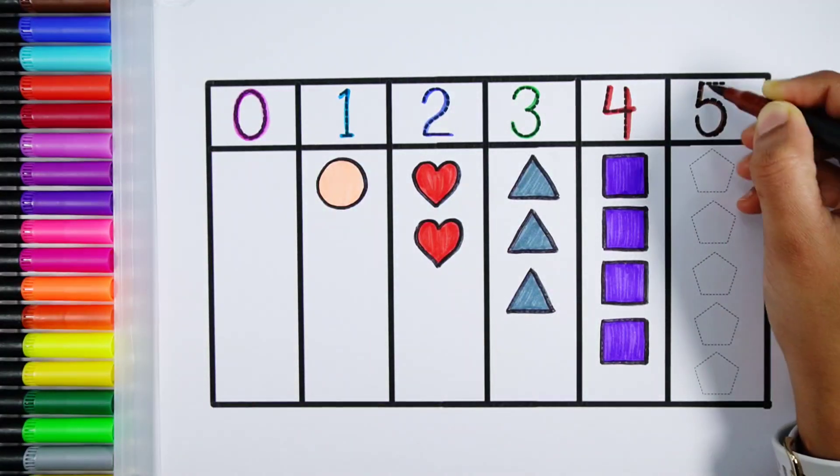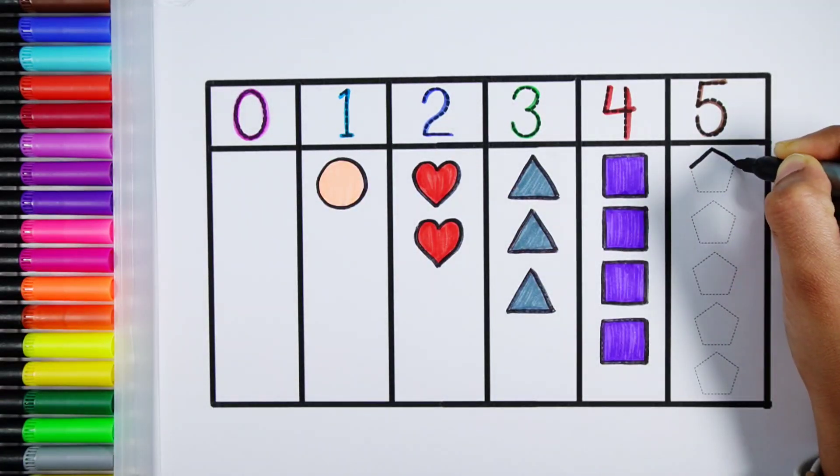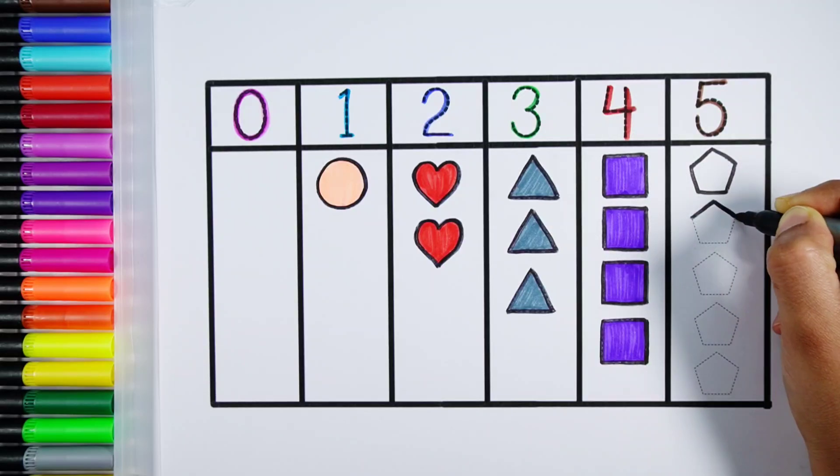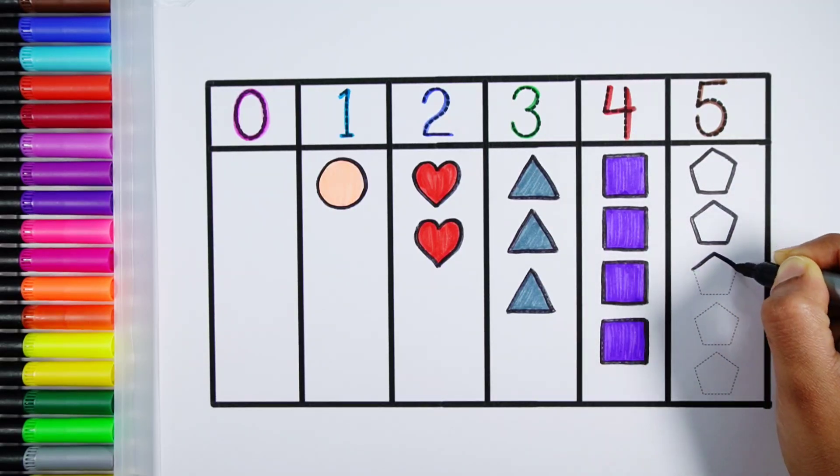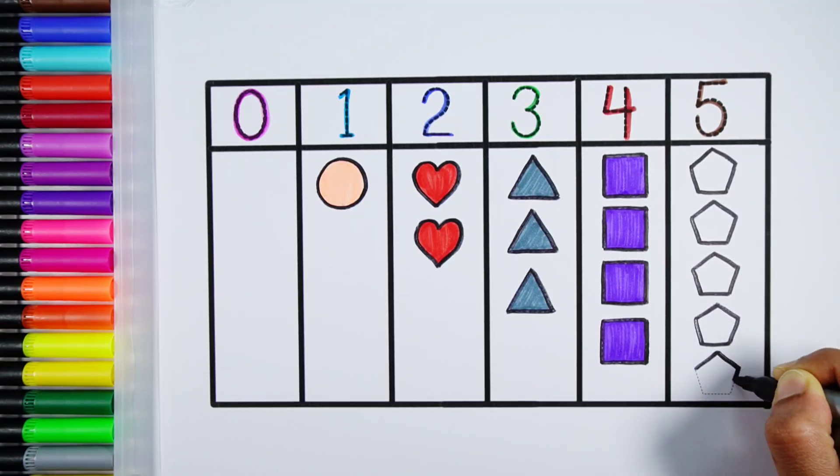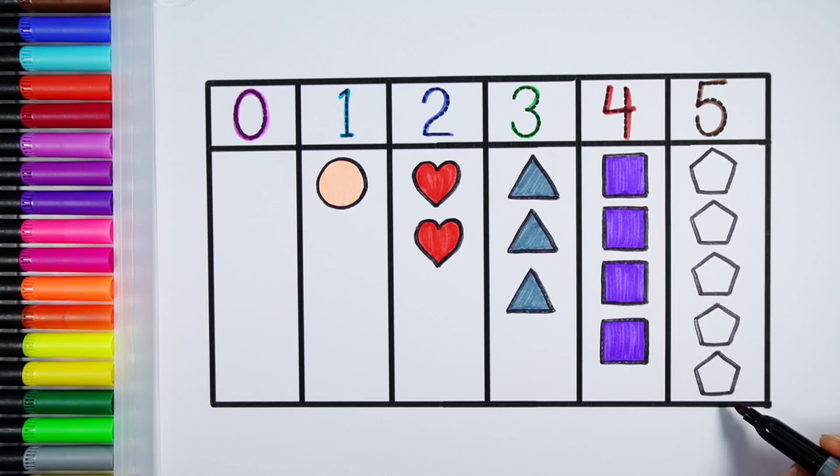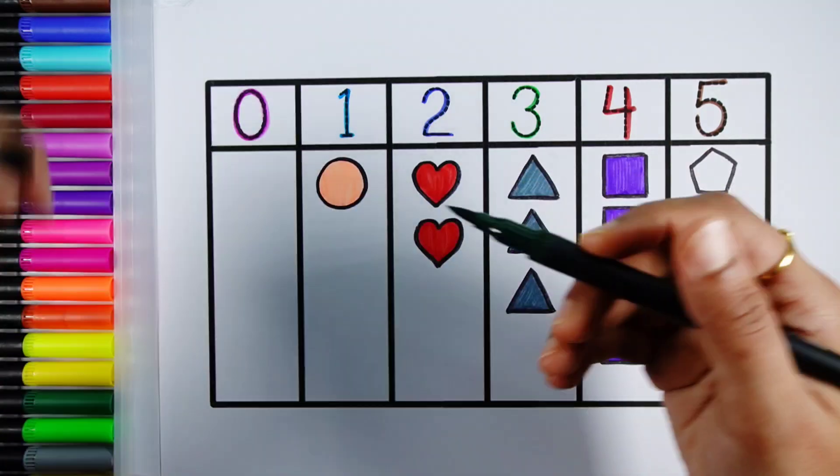Number five. One, two, three, four, five, five pentagons. Dark green color.